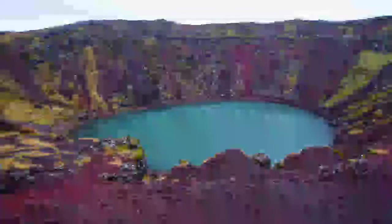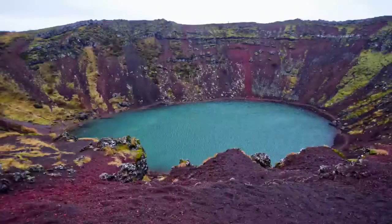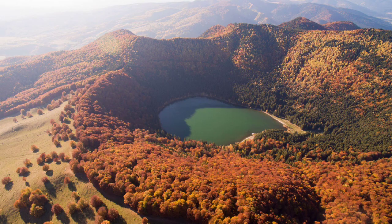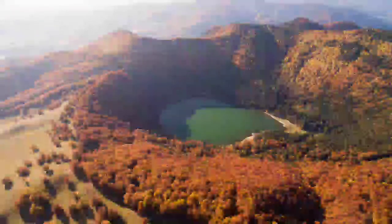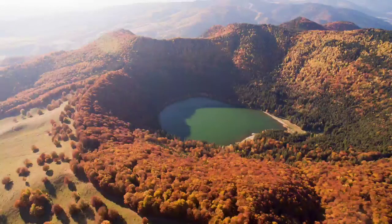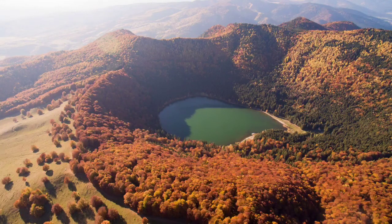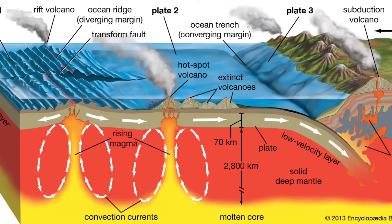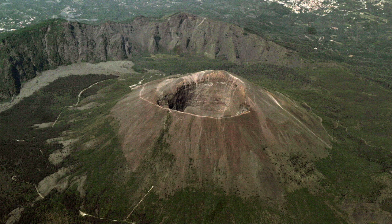Extinct volcanoes have been active once upon a time but there is no indication of future eruption — these are also called dead volcanoes. The craters of such volcanoes are generally converted into a lake due to accumulation of water. However, it is very difficult to consider any volcano as truly extinct, because due to internal movement, an eruption may occur at any time in the future. No volcano can be considered permanently inactive.